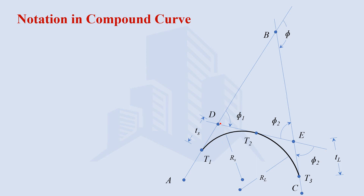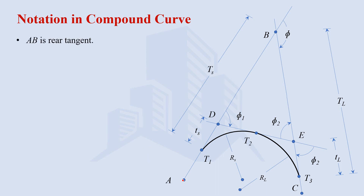Keep in mind that the distance from T1 to D equals D to T2. Similarly for the large curve, T3 to E equals E to T2, because these two are simple circular curves being combined to form a compound curve. Separately they are simple circular curves, so tangent length on both sides of each curve is equal. The distance from T1 to B is represented as TS — total tangent length on the shorter side. Similarly, T3 to B is TL — total tangent length on the large curve side.